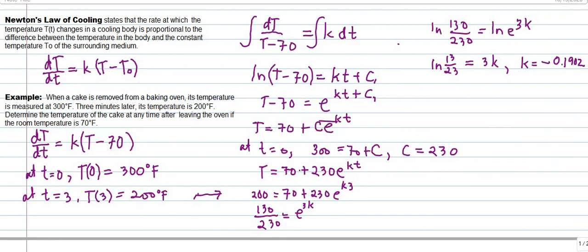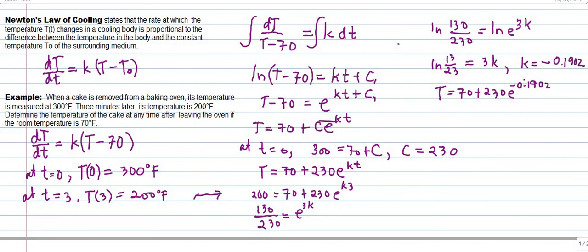Going back to our equation and substituting the value of k, our final temperature equation is T equals 70 plus 230 times e raised to (negative 0.1902 times t). Using this equation, we can now find the value of T in terms of time in minutes.